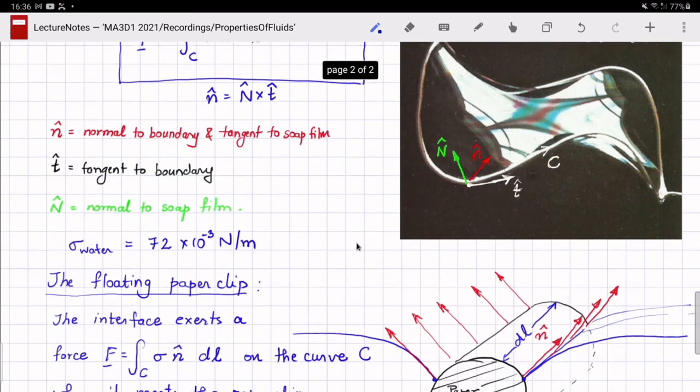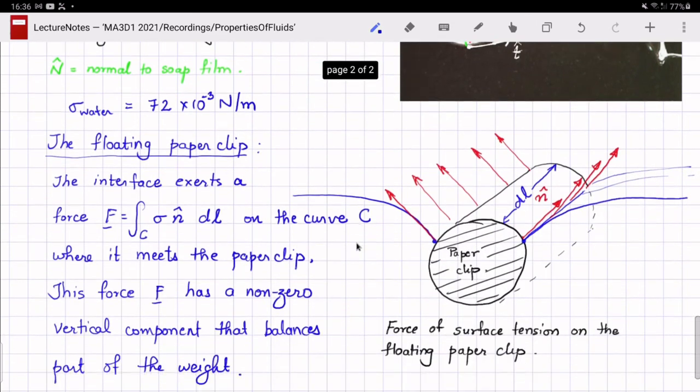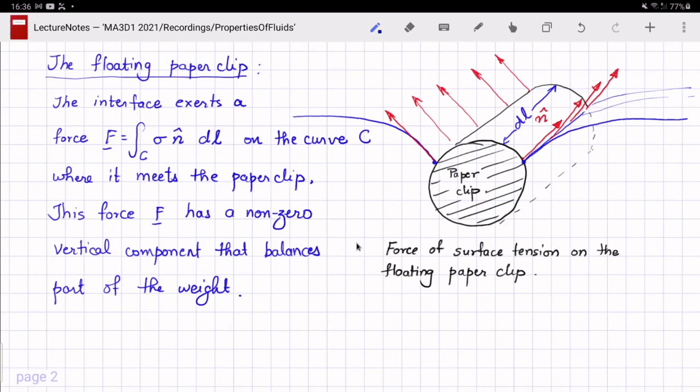Now to explain the floating paper clip, consider a small section of the wire that forms the paper clip of length dl. And the curve in blue is the shape of the water interface. The arrows in red show the unit vector n hat which are everywhere parallel to the interface but normal to the boundary curve.